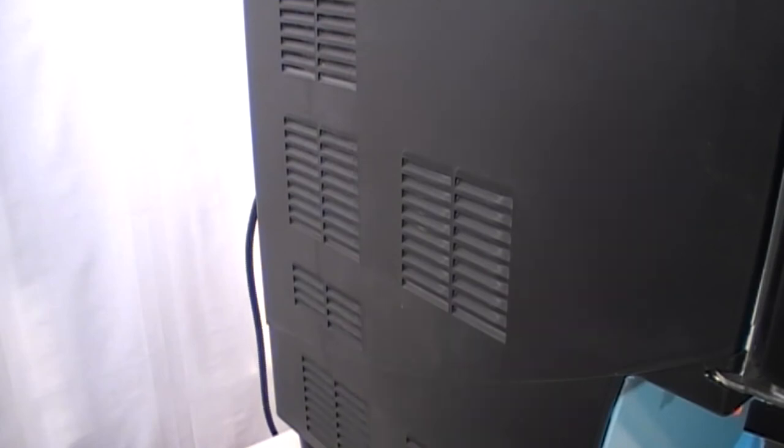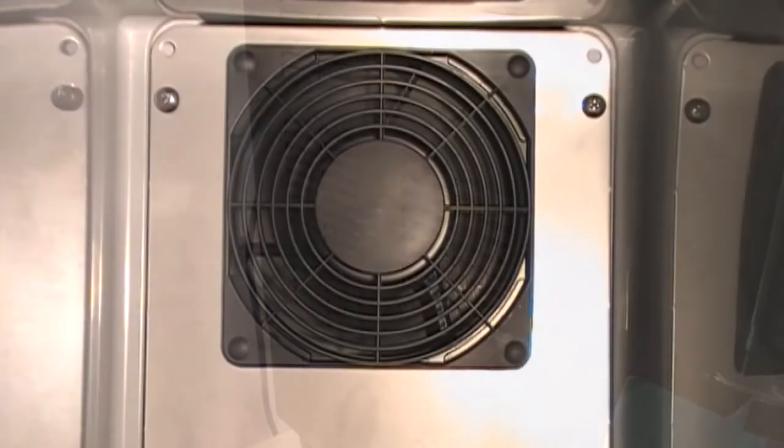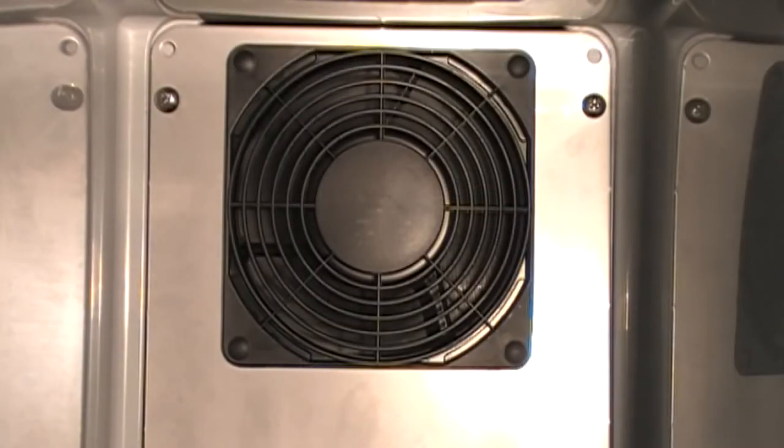When unit is first supplied electrical power, listen to hear the onboard air compressor located in the rear of the unit runs for approximately 3 seconds, and observe that the cabinet's internal fan is on and running. Both are normal operations of the unit.